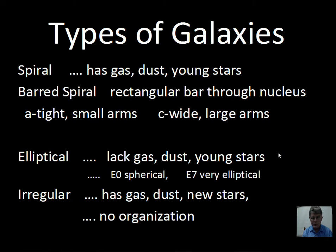Regular spirals have more of an elliptical-shaped nucleus, and a barred spiral has a rectangular-shaped bar that runs through the nucleus. The A-type has very tight, small arms; the C-type spiral has a very large extent to the spiral arms — they're spread out, very large.